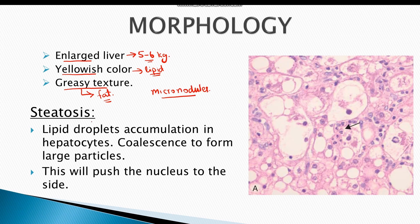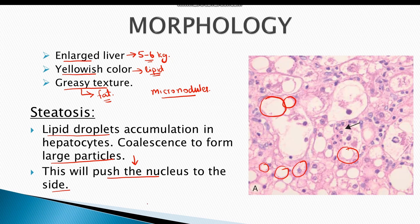The first stage of alcoholic hepatitis is steatosis. The histological picture reveals small lipid droplets inside the cells, which later on come together to form large particles. This enlargement of lipid particles pushes the nucleus to the periphery of the cell. These are the fat-laden hepatocytes visible here. This stage resolves with abstinence from alcohol.